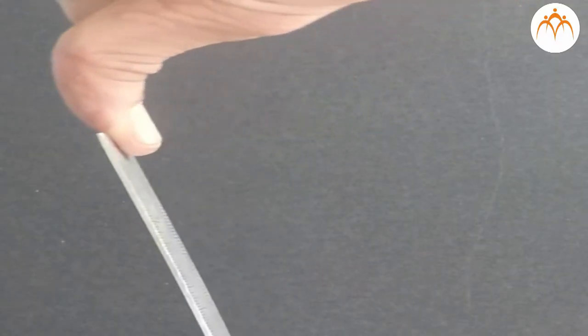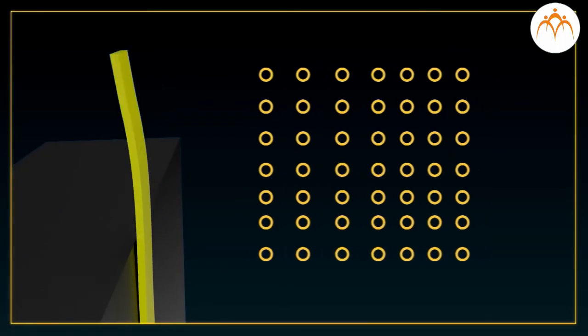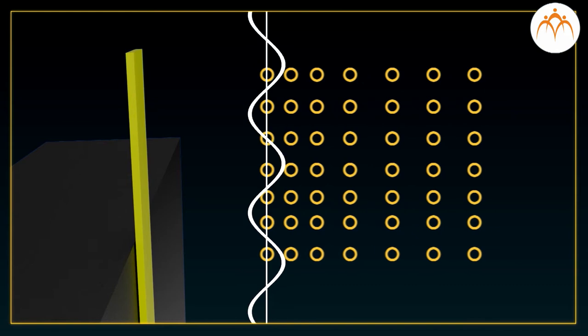The vibrating ruler pushes the molecules in the air making them bunch together. We will explore this better with the help of animation. You can hear the sound of the ruler as it vibrates. But how does the sound produced look like? Air through which the sound wave is traveling looks something like this.